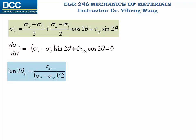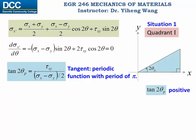Now we want to evaluate the original function at this critical point. To do that it helps to visualize the angle 2*theta_p. From trigonometry we learned that the tangent function is periodic with a period of pi, which means one full revolution of 2*pi has two periods. Therefore within one full revolution there will be two angles with exactly the same tangent value. Let's first assume our angle 2*theta_p falls in the first quadrant. According to the right triangle definition, the tangent value is the opposite side over the adjacent side. Here we are assuming both tau_xy and (sigma_x minus sigma_y)/2 are positive, so angle 2*theta_p falls in the first quadrant.